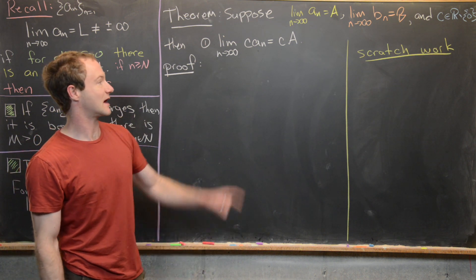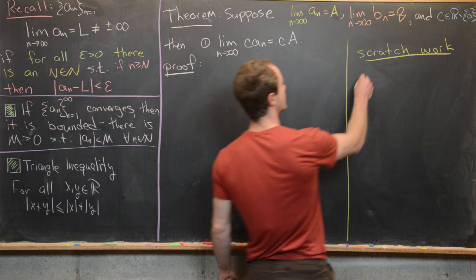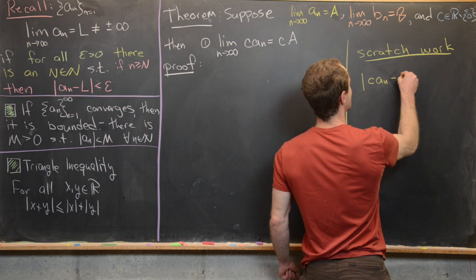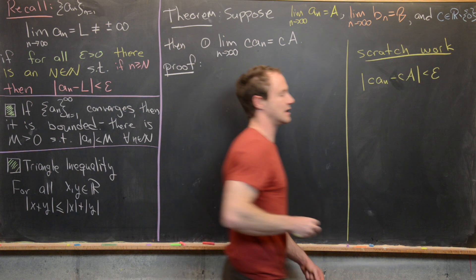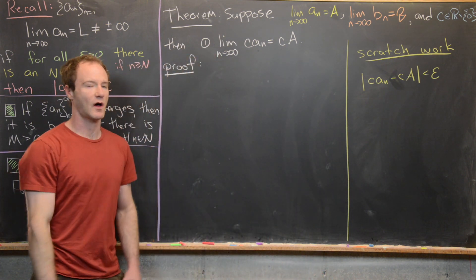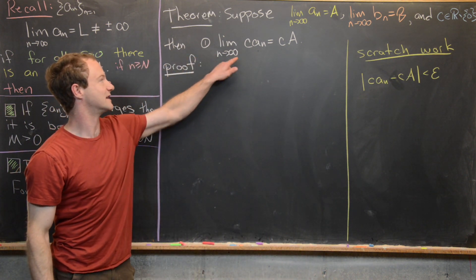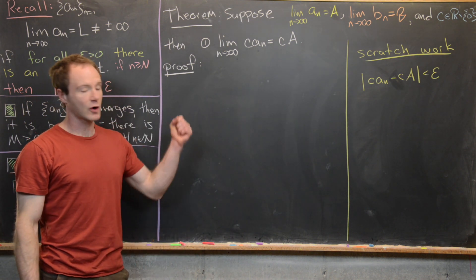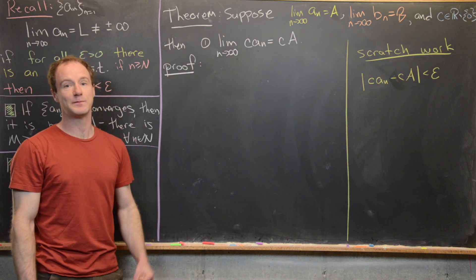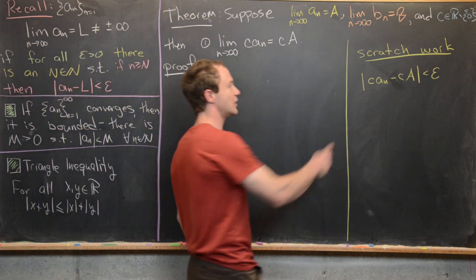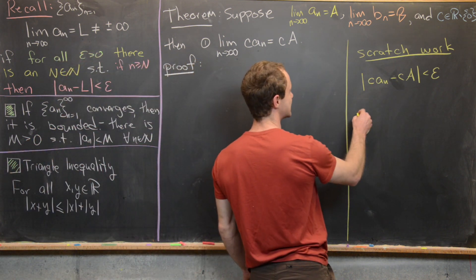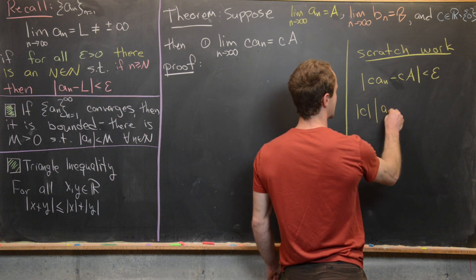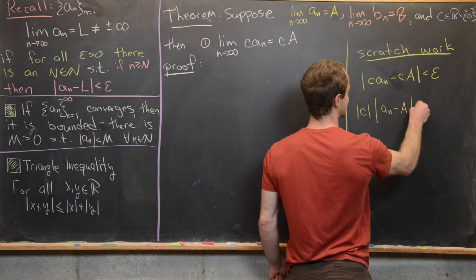For the first property — that lim(c·aₙ) = c·a — we want |c·aₙ − c·A| to be less than epsilon. We can factor out c to get |c|·|aₙ − a| < epsilon.